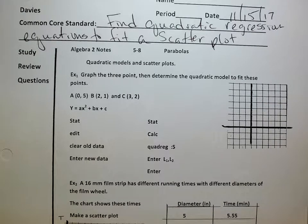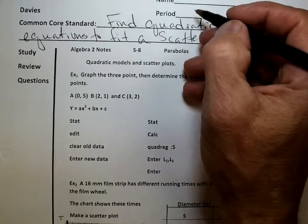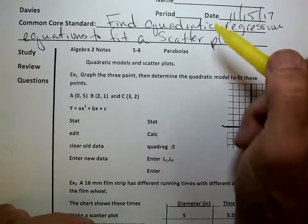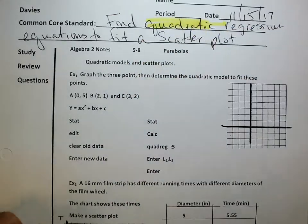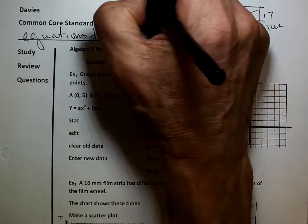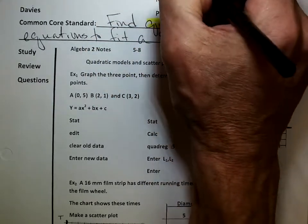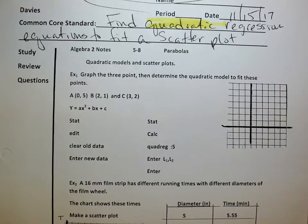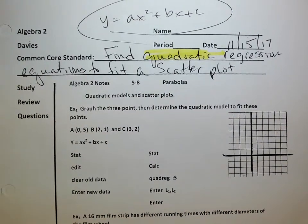We're going to find quadratic regression equations to fit a scatter plot. Remember how we did the linear regression on our calculator? It's the same thing except we're just going to use quadratic regression. When we're talking about quadratic regression, this word quadratic means it's going to have some x squared. So we know our answer is going to be some y equals ax squared plus bx plus c. It's really not too hard because the calculator is going to do all of the work. We just have to push the buttons, but we have to push the right buttons at the right time.